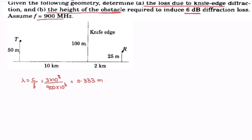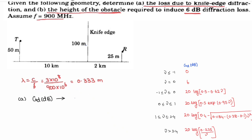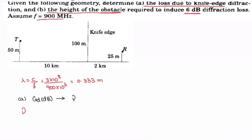To find the loss due to knife-edge diffraction, we need to find V first. We have two formulas for V. Since the transmitter and receiver are at different heights, we use the alpha formula: V equals alpha multiplied by the square root of 2 times D1 times D2 divided by lambda times (D1 plus D2). D1 is 10 km and D2 is 2 km.